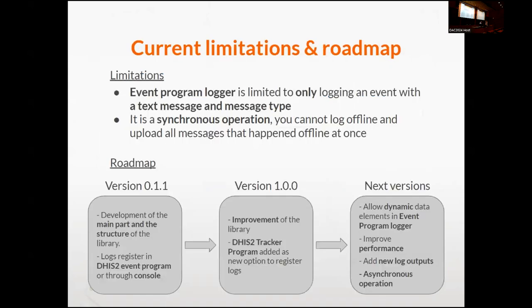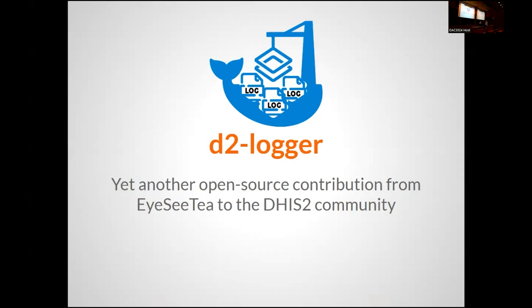What are the limitations at this stage? The D2 Logger is an event program logger, limited to tracking only a message and the type of message. We want to evolve, but that's what we have. It is a synchronous operation — every time you type that line in code, at that moment an event is generated. We want to bundle groups of messages in the future, and we want to be able to work offline and then send anything generated offline. We don't want to take more time — just to tell you that this is available for you. You can use it from NPM if you develop in TypeScript. Thank you — I'll pass now to Sneha, who will share a screen and show you in real time with a playground how this works.